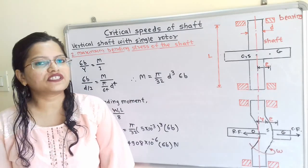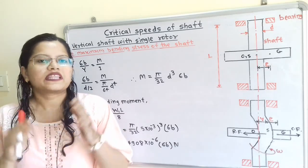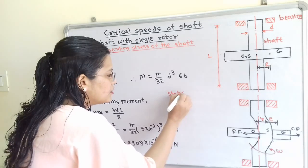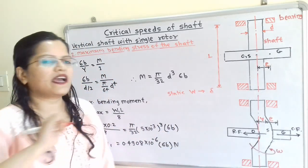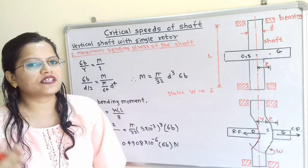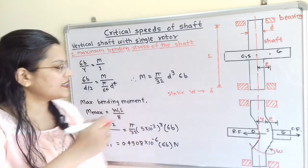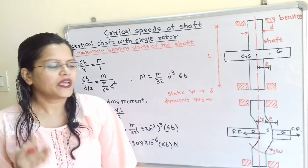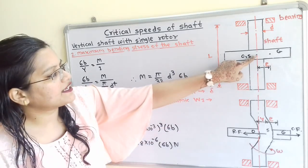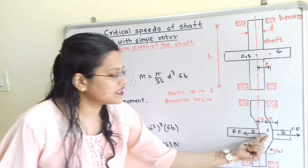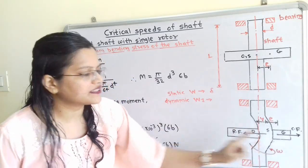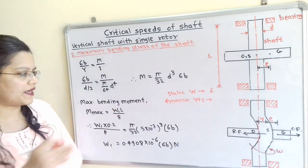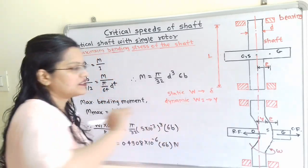The deflection delta calculated is the static deflection due to load W under static conditions. When the shaft starts rotating, it is subjected to dynamic load W1, which creates deflection Y. In the rotating diagram, point S shifts by distance Y, so the dynamic deflection equals Y.